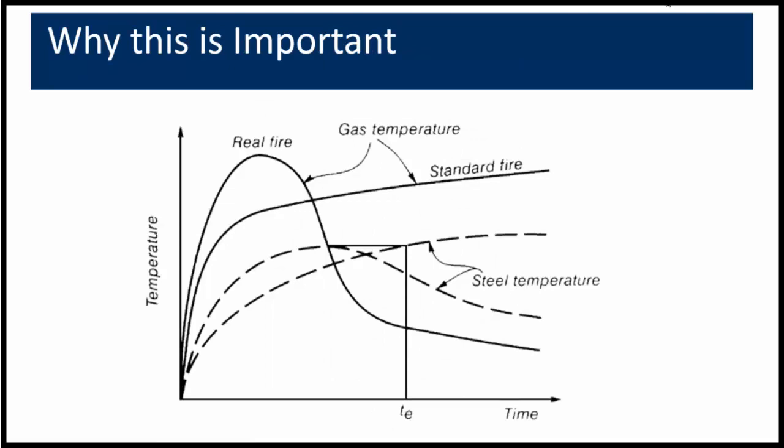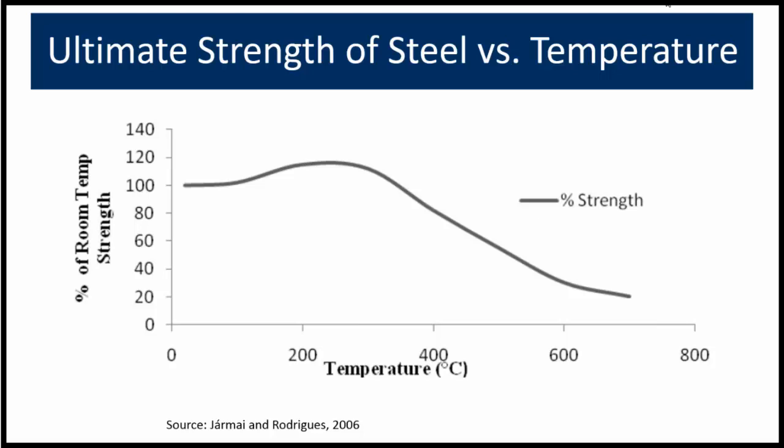This illustration shows the relationship between the interior temperature of a building and the effect on exposed steel. The curve labeled 'real fire' shows typical fire growth versus time with increasing temperature. As the temperature increases from an uncontrolled fire growing in the building, it will eventually increase the temperature of the structure. As the temperature of the steel increases, it loses strength and will not carry the loads. This is why structural components need to be insulated from the heat of an uncontrolled fire within a building.